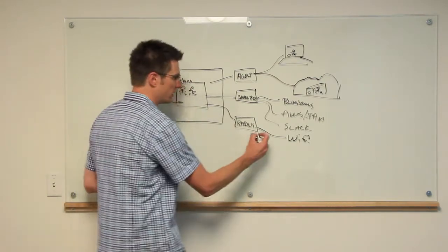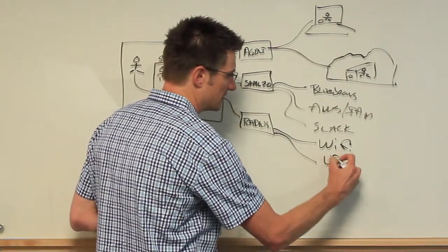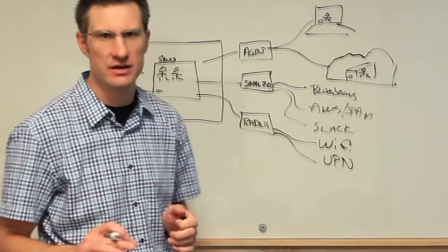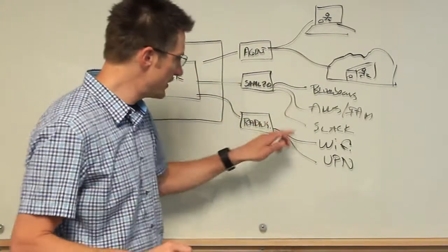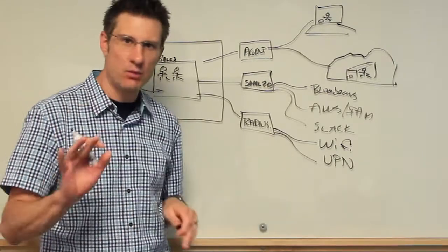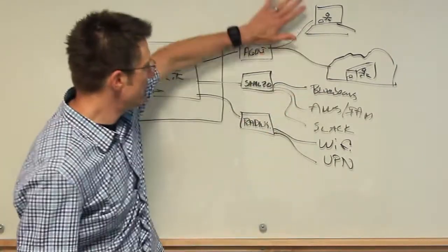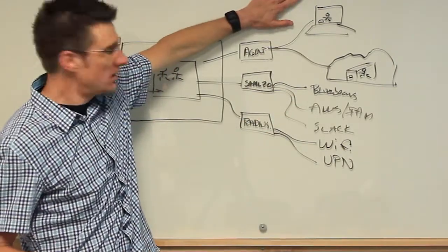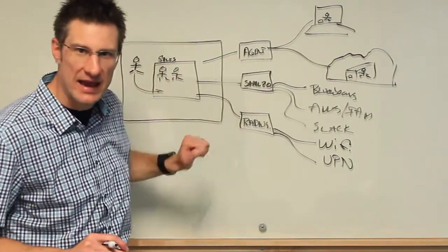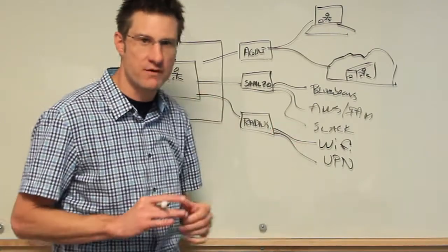The second related to RADIUS very often is our VPN clients. OpenVPN, name it. There's a ton of different VPN clients. Very similar. At the end of the day, these are providing network access. So we have system level access, we have web application level access, and now we have network access bound. But let's go further.